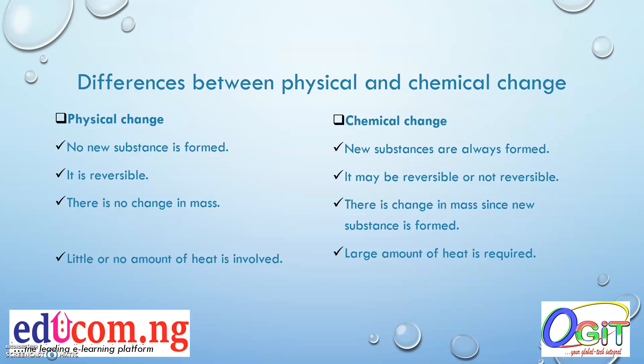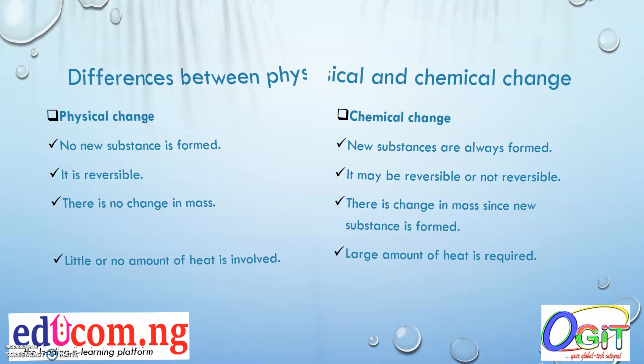In a physical change, there is no change in mass, whereas in a chemical change there is a change in mass because a new substance is formed. Little or no energy is involved during a physical change, but during a chemical change a large amount of energy is required.